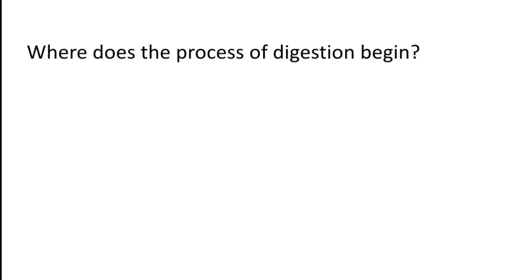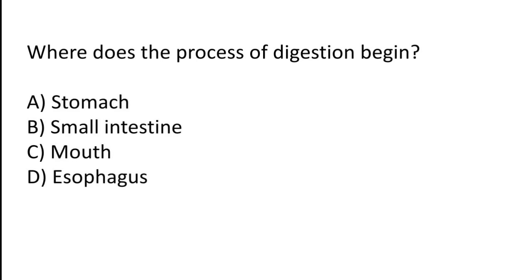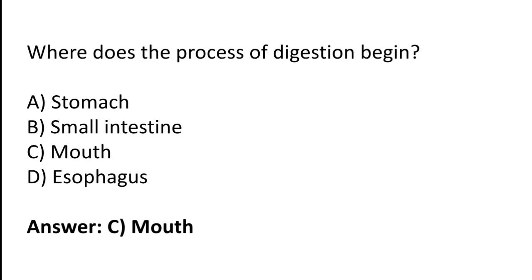Where does the process of digestion begin? Option A: Stomach. Option B: Small intestine. Option C: Mouth. Option D: Esophagus. The correct answer is Option C — the process of digestion begins in the mouth.